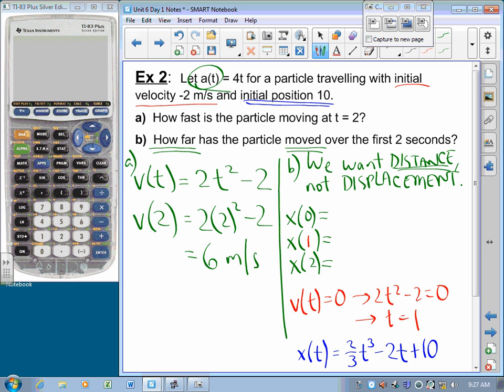I know that at time equals 0, the particle is at 10. I know at time equals 1, the particle is at 2 thirds, minus 2, plus 10. And then, that is 8 and 2 thirds.